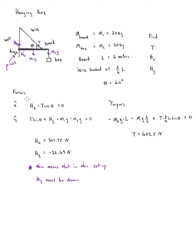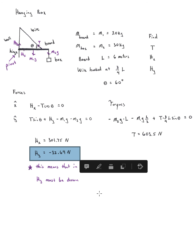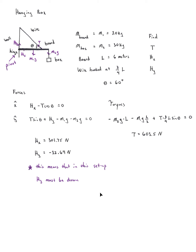From the torque equation we get the tension in the string. Once we know the tension, we can find the horizontal hinge force HX and then the vertical hinge force HY. An interesting result: with the wire position and box weight I selected, HY ends up being negative. That just means I picked the wrong direction — I assumed HY was up, but the negative sign tells us HY is actually down. The tension in the rope is so large that the hinge actually pushes down on the board to prevent it from rotating upward.